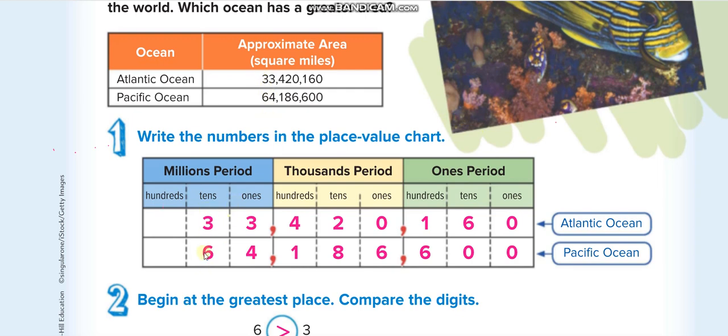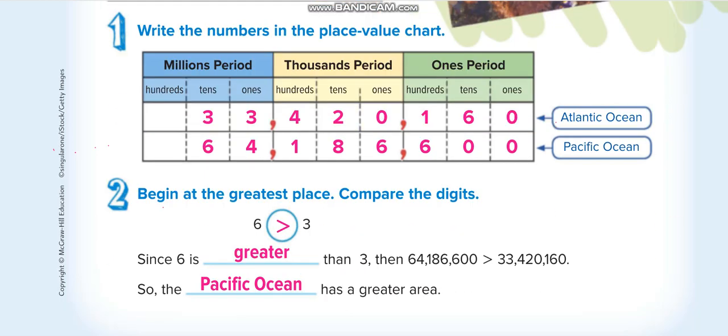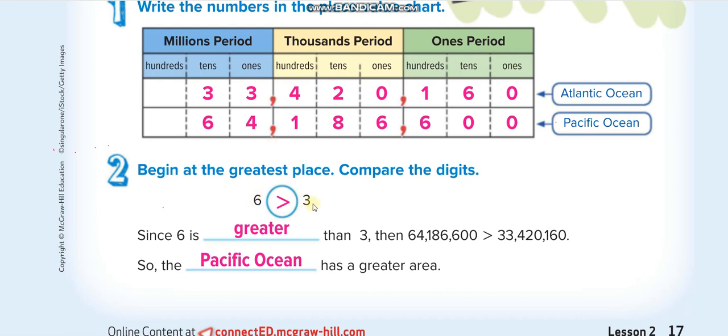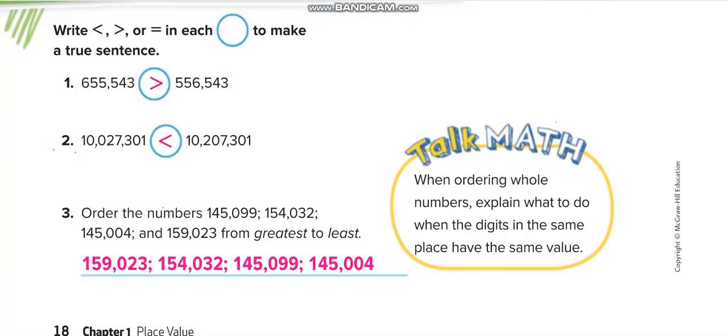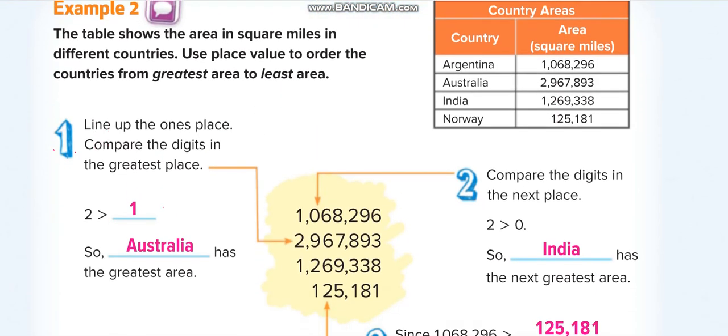So 33 million and 64 million. Of course, Pacific Ocean is the greater area. What is the first place value we can directly recognize? In 10 millions, this is 3, this is 6. 6 is greater than 3, so the Pacific Ocean is the greater one.